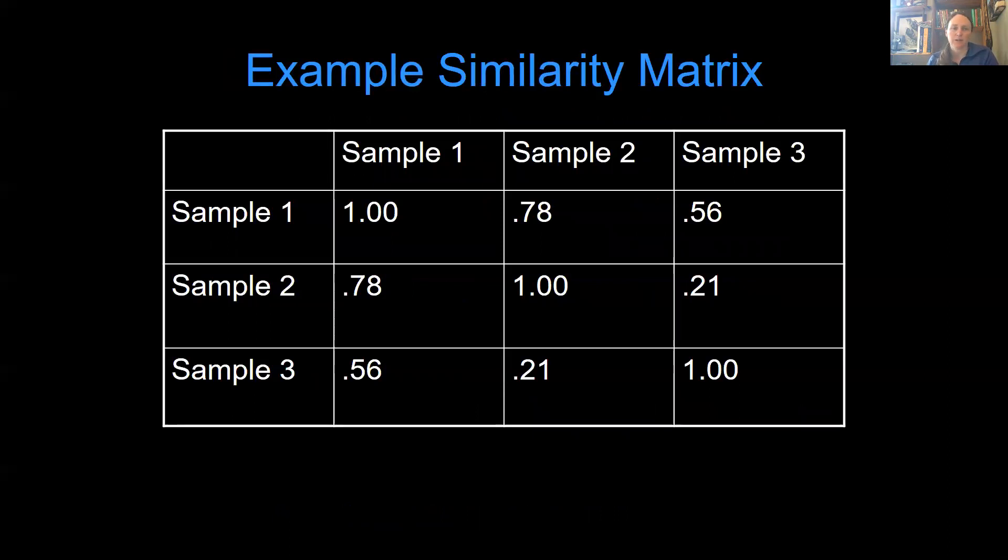So here's an example similarity matrix. You have three samples. Sample one and sample one, of course, are perfectly similar to one another. Sample one and sample two have a 0.78 similarity. And sample one and sample three have a 0.56 similarity. Sample two and sample three have a 0.21 similarity. So it turns out the least similar to one another are two and three, and the most similar to one another are one and two. So this is how similarity matrix works. And you can see that the information is the same on the top of the rectangle, kind of triangular. If you use the ones as a diagonal line, the values are the same on the top and the bottom. So you really only need half of this matrix to understand the system.